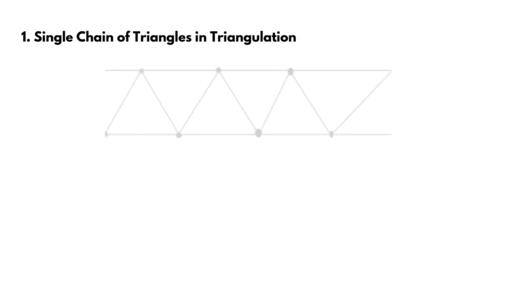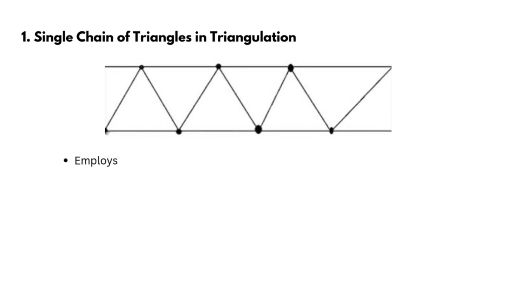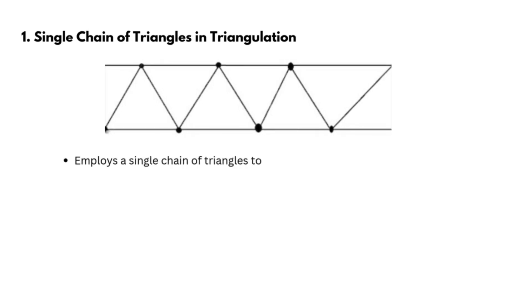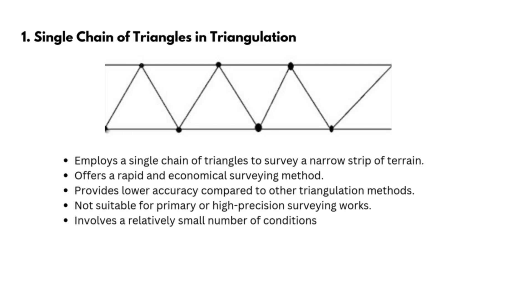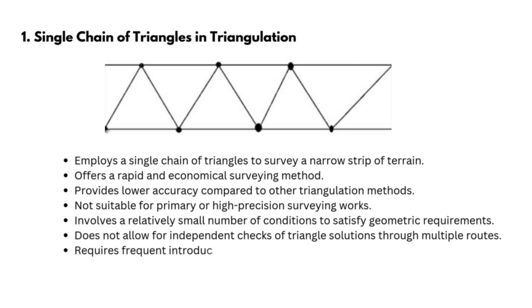1. Single chain of triangles in triangulation. A single chain of triangles is used to survey a narrow strip of terrain. This figure or system is rapid and economical. The figures made in this method are not so accurate and are not used for primary works. The number of conditions that are used to fulfill the figure conditions is relatively small. In this method, two independent routes cannot be used to determine the solution of the triangles. Hence, to reduce the accumulation of errors, it is recommended to introduce a baseline frequently.